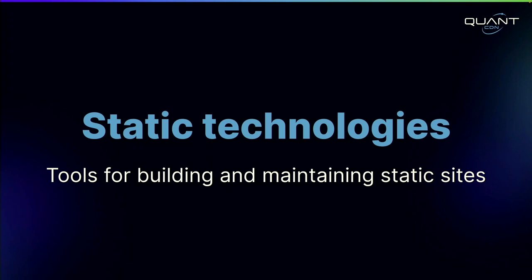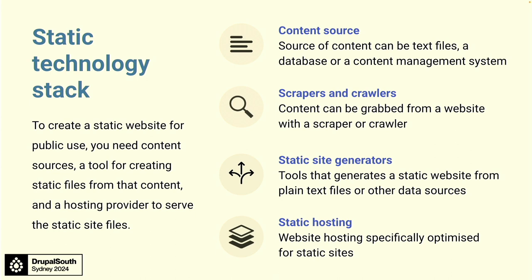Let's get into static technologies you can use to build out different websites. When talking about the static technology stack, we break it down into a few areas. There's the content source — where is your data coming from, flat files or databases? Then there are different methods to get the static representation from wherever it's stored into a static host. You can use a scraper or crawler to snapshot what the browser will see and push that up. You can use a static site generator like Jekyll to build out template files. Or you can use Drupal modules that handle rendering, build a Drupal theme, and push a static representation somewhere to be hosted.